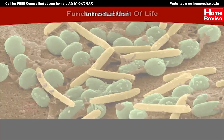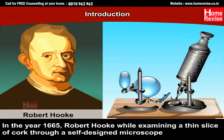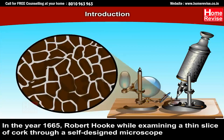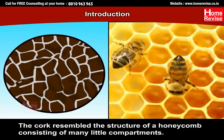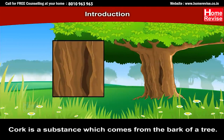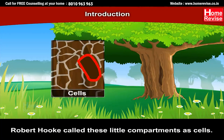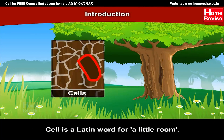The cell is the fundamental unit of life. If it weren't for natural human curiosity, we wouldn't have discovered anything. In the year 1665, the ever-so-curious Robert Hooke, while examining a thin slice of cork through a self-designed microscope, saw that the cork resembled the structure of a honeycomb consisting of many little compartments. Cork is a substance which comes from the bark of a tree. Robert Hooke called these little compartments 'cells' — cell being a Latin word for a little room.